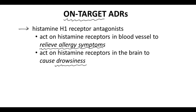Another issue is that a drug may be selective for the intended target, but the target may control multiple responses. An example of this are the opioid pain relievers. Opioids act on opioid receptors, which can help manage pain, but also release endorphins. Endorphin release is connected to the addictive nature of opioids.